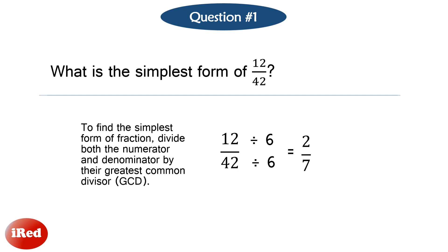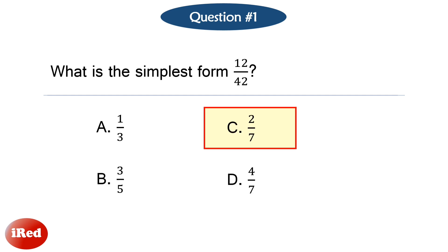The simplest form of 12 over 42 is 2 over 7. So the answer for number one is letter C, two-sevenths.